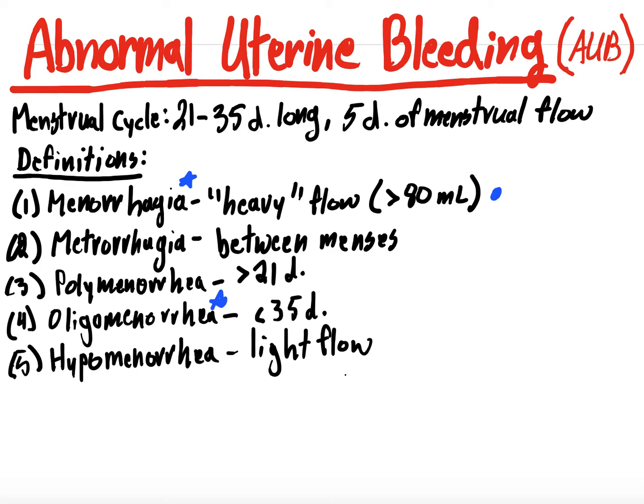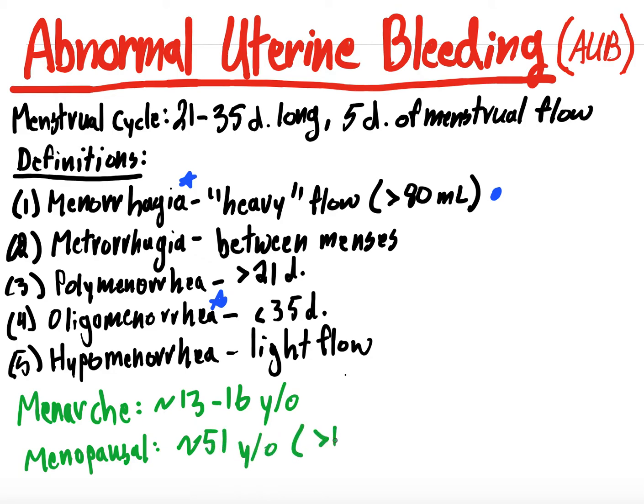I do think it's important just to briefly state menarche. So another thing to know is when patients will start having their menses. Menarche is on average, patients 13 to 16 years old, right, is when they'll start having menses. And then menopause or the ceasing of said menses is typically about 51 years old. And it's defined by greater than 12 months without a menses. All right. So patients should start having their menses about 13 to 16 years old, and they should go through menopause when their menses stops about 51 years old. And that's if they go more than 12 months without any period.